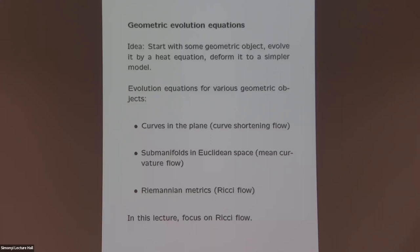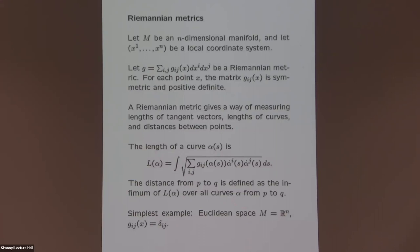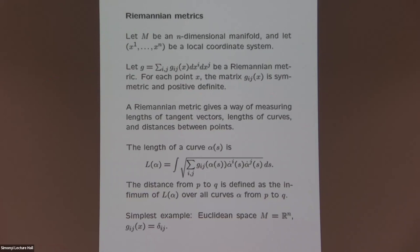Let me digress for a few minutes to remind you of the background: what a Riemannian metric is and what curvature means. We assume M is an n-dimensional manifold. In a local coordinate chart near some point, x_1 to x_n are the coordinate functions. A Riemannian metric is a symmetric tensor field g_ij, which locally can be thought of as a function taking values in the space of symmetric positive definite matrices.